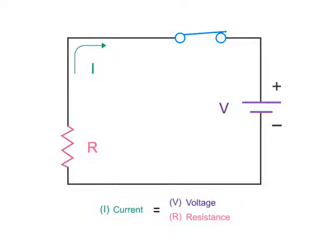This means that when you increase voltage and keep resistance constant, current flow increases. As resistance in a circuit increases and voltage remains constant, the current flow decreases.